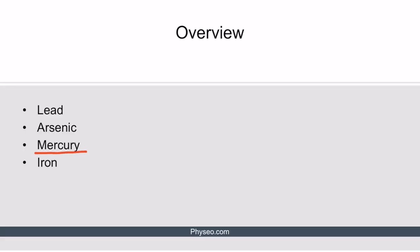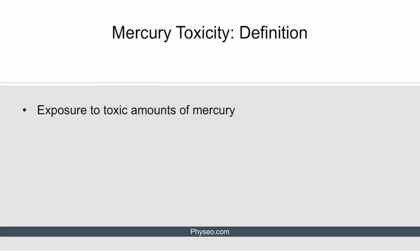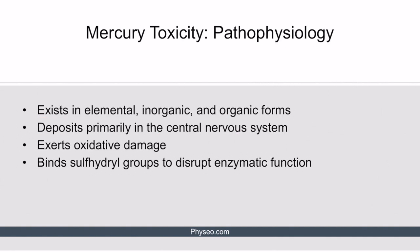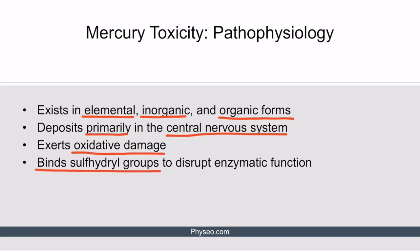Mercury toxicity is characterized by exposure to toxic amounts of mercury. Mercury exists in elemental, inorganic, and organic forms. Elemental form is absorbed primarily through inhalation, whereas the latter two forms are absorbed predominantly through the GI system. Once inside the system, mercury deposits primarily in the CNS, where it exerts oxidative damage and, similar to arsenic, binds sulfhydryl groups on enzymes and disrupts their function.